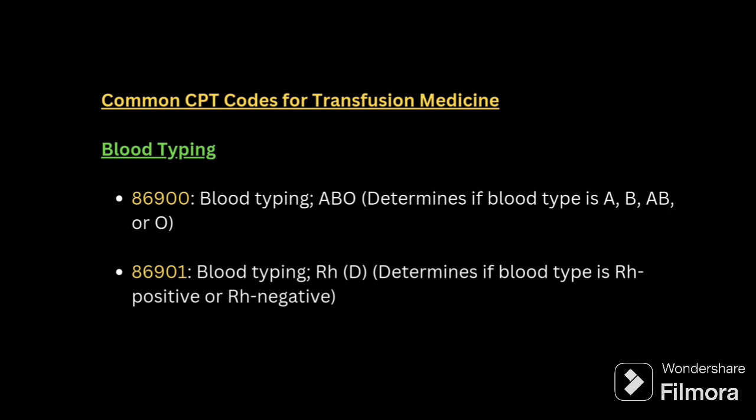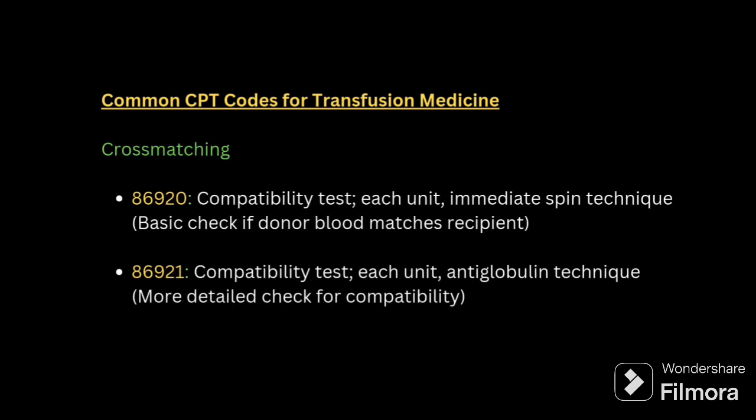Common CPT codes for transfusion medicine: blood typing is 86900 for ABO type, and 86901 for RH-D typing, which determines if the blood is RH positive or RH negative. For cross matching, 86920 is the compatibility test using immediate spin technique, and 86921 is the compatibility test for each unit using the anti-globulin technique.